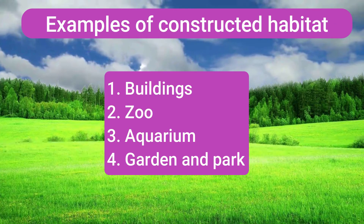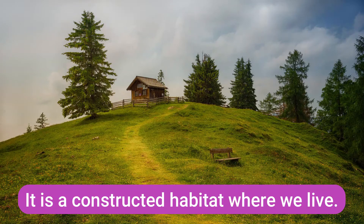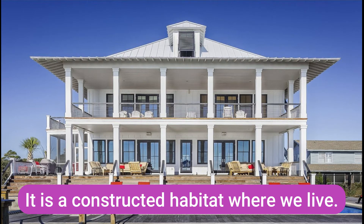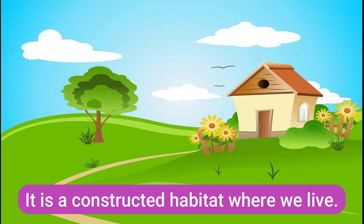Some of the constructed habitats are buildings, zoo, aquarium, garden, and parks. Buildings are man-made constructed habitats where we live. We can see different types of buildings — houses we make for ourselves to live in.